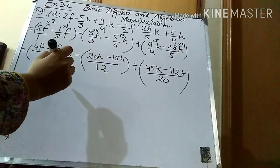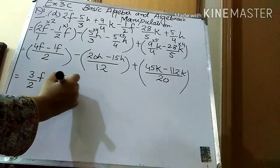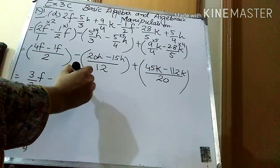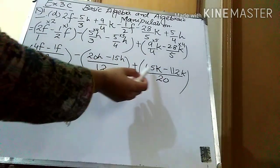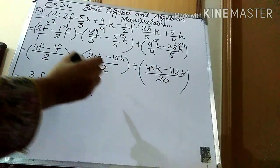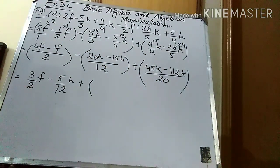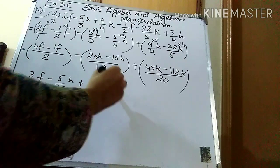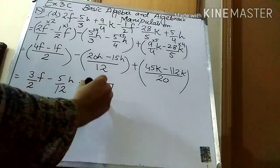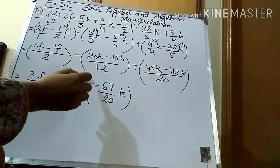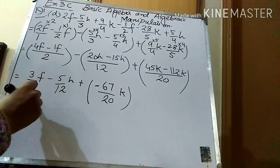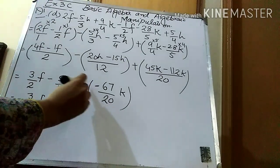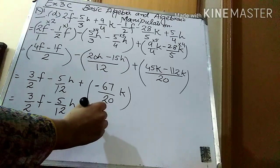For K terms: LCM of 4 and 5 is 20. Which times 4 is 20? It's 5 times — multiply with 5. Which times 5 is 20? It's 4 times — multiply with 4. So: 9×5 = 45K minus 28×4 = 112K. 45 − 112: the bigger number is 112, so the sign is minus; 112 − 45 = 67, giving −67/20K. The final answer is 3/2F − 5/12H − 67/20K.